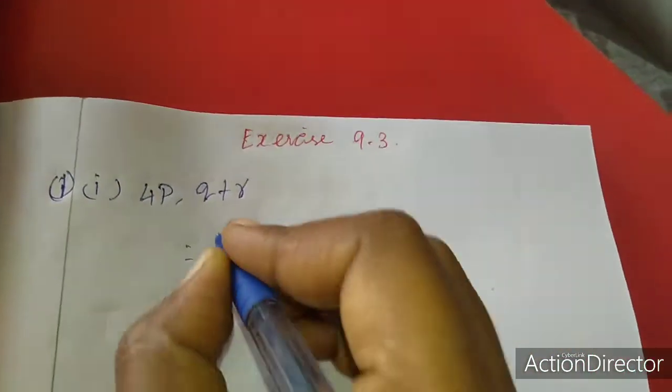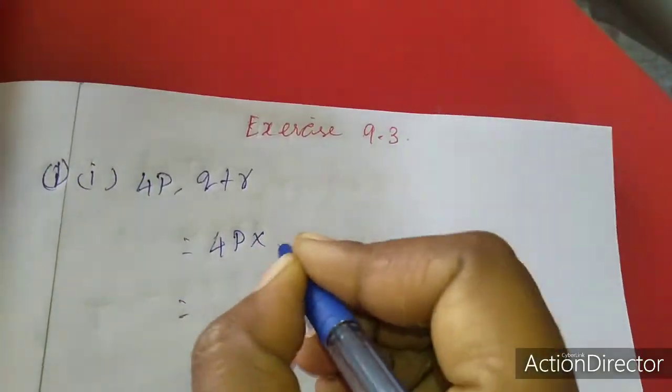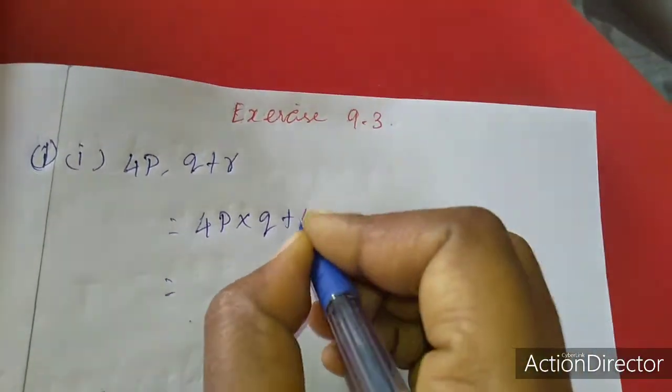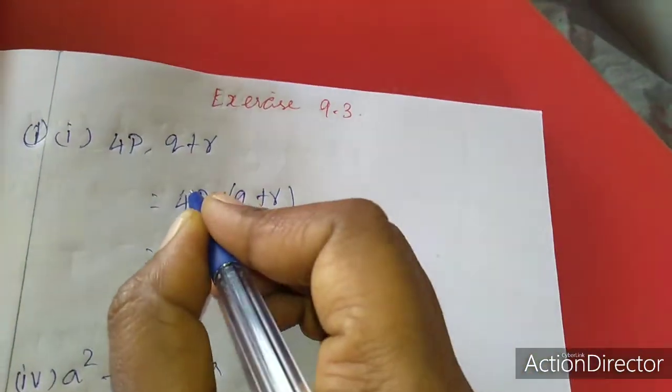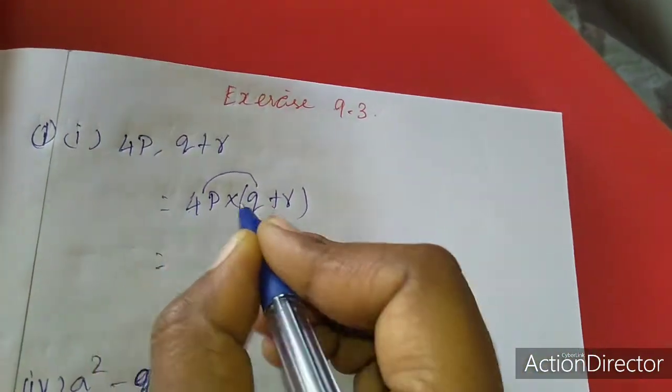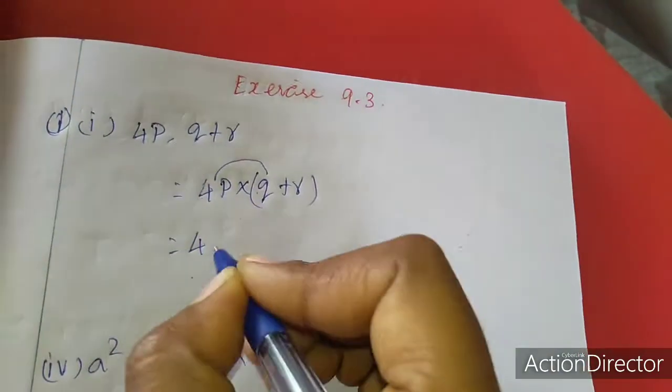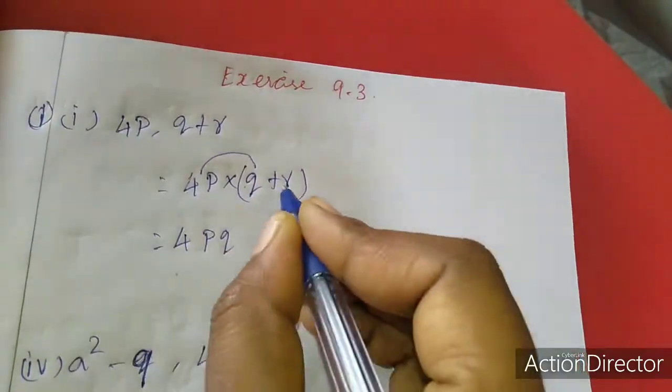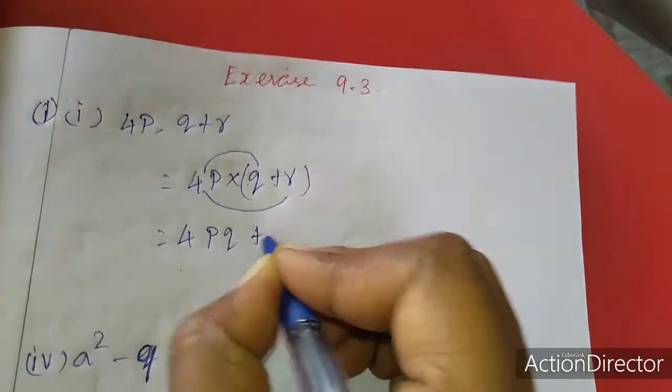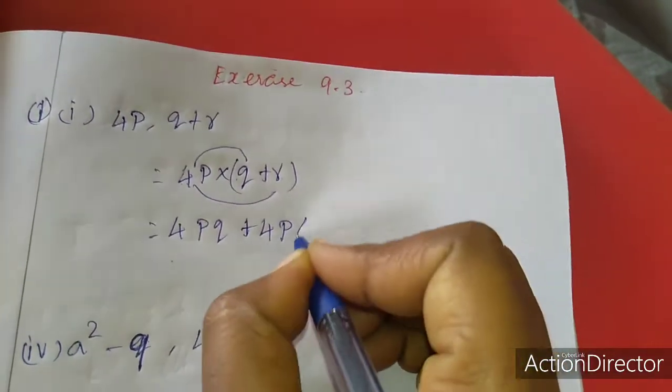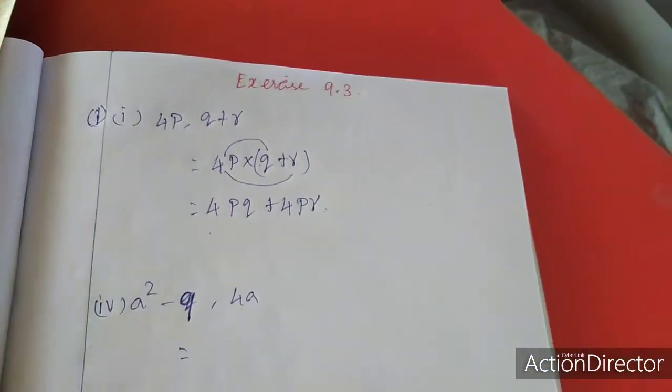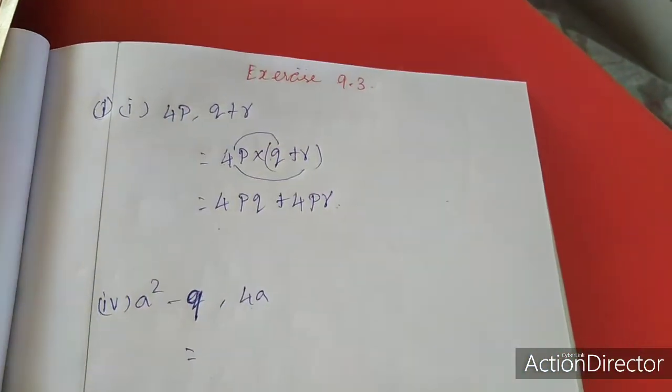This is the sum, so 4p into q plus r, it is bracket. First one number, multiply. First it is multiply, 4 into 1 is 4, p into q is pq. Again, 4 plus, in the plus, 4 into 1 is 4, p into r is pr. This is the step. Now I am going to explain in book itself, listen here.